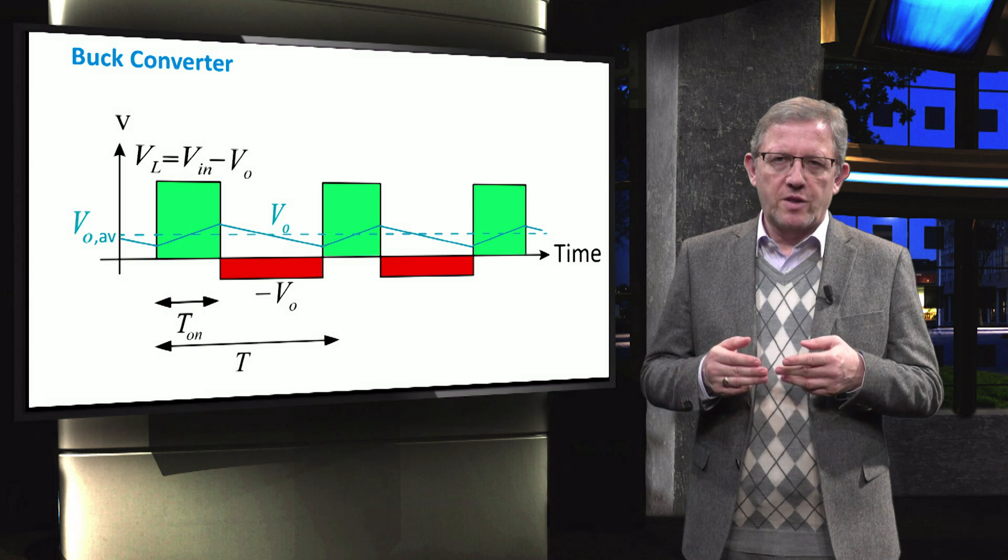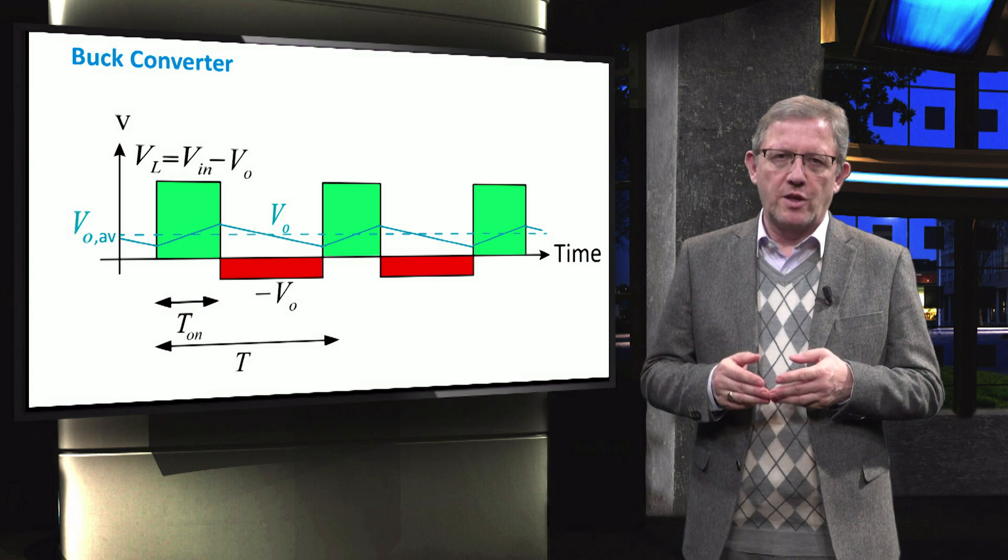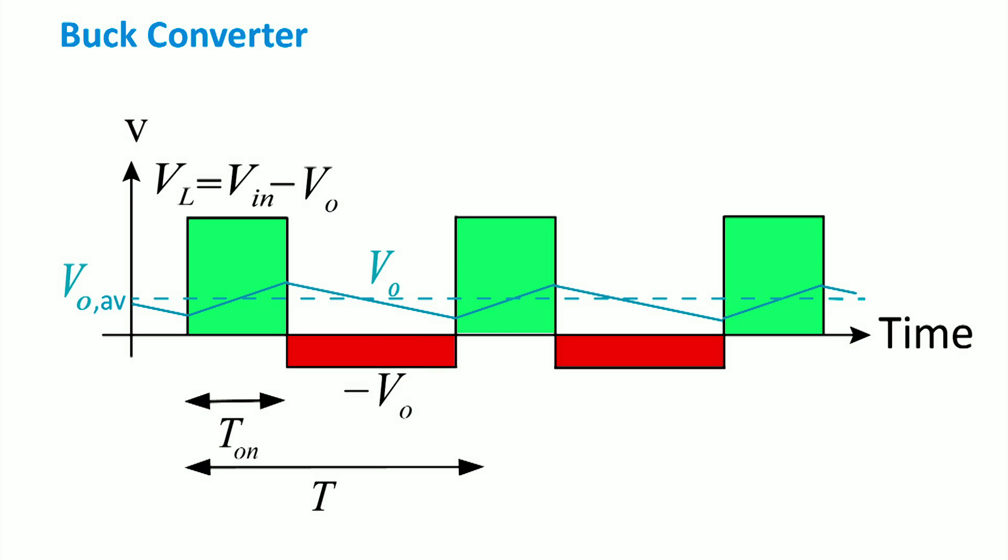Let us see the voltage through the inductor during both on and off states of the switch. During one switching cycle, it is important to note that the average inductance voltage variation is equal to zero.